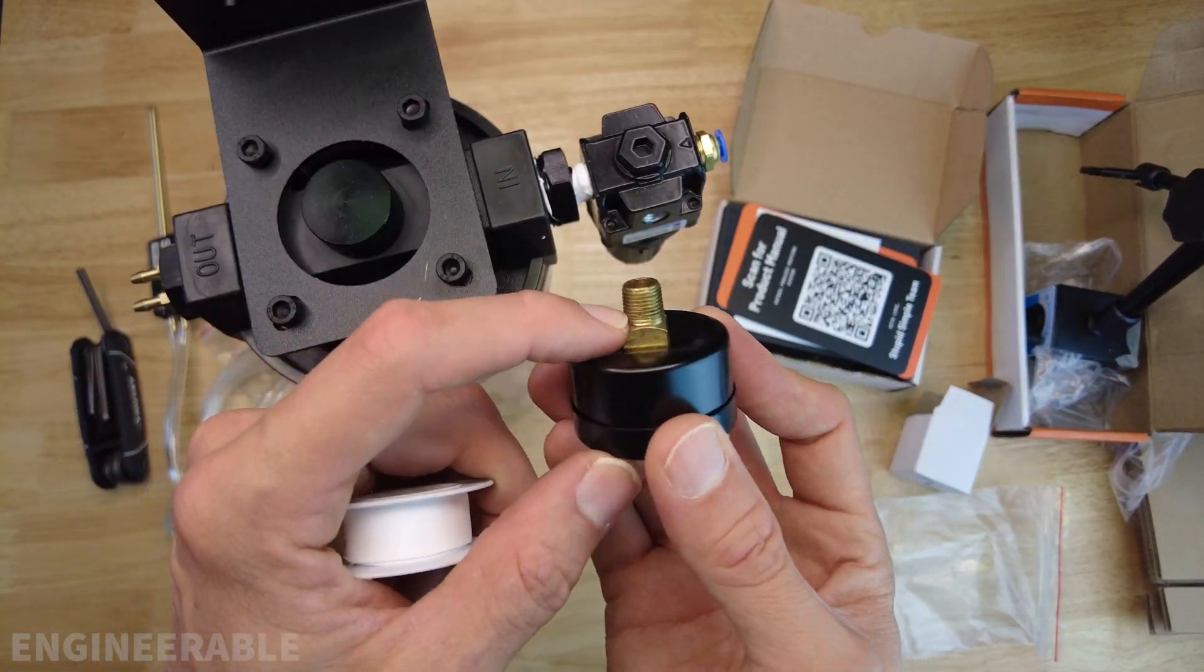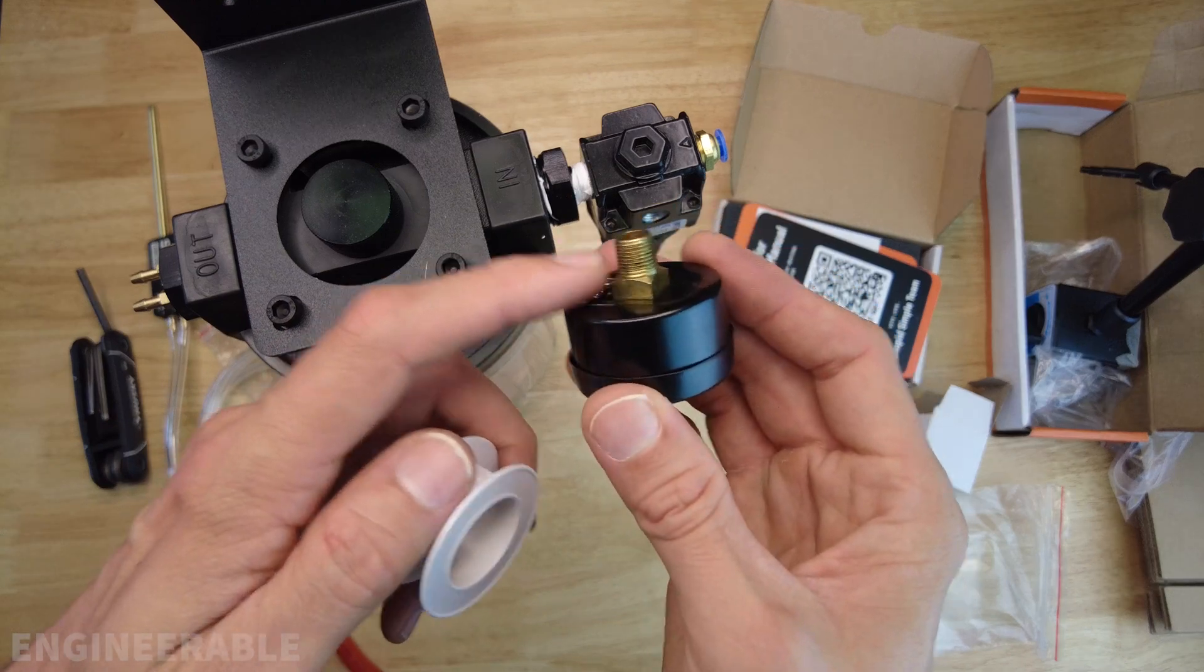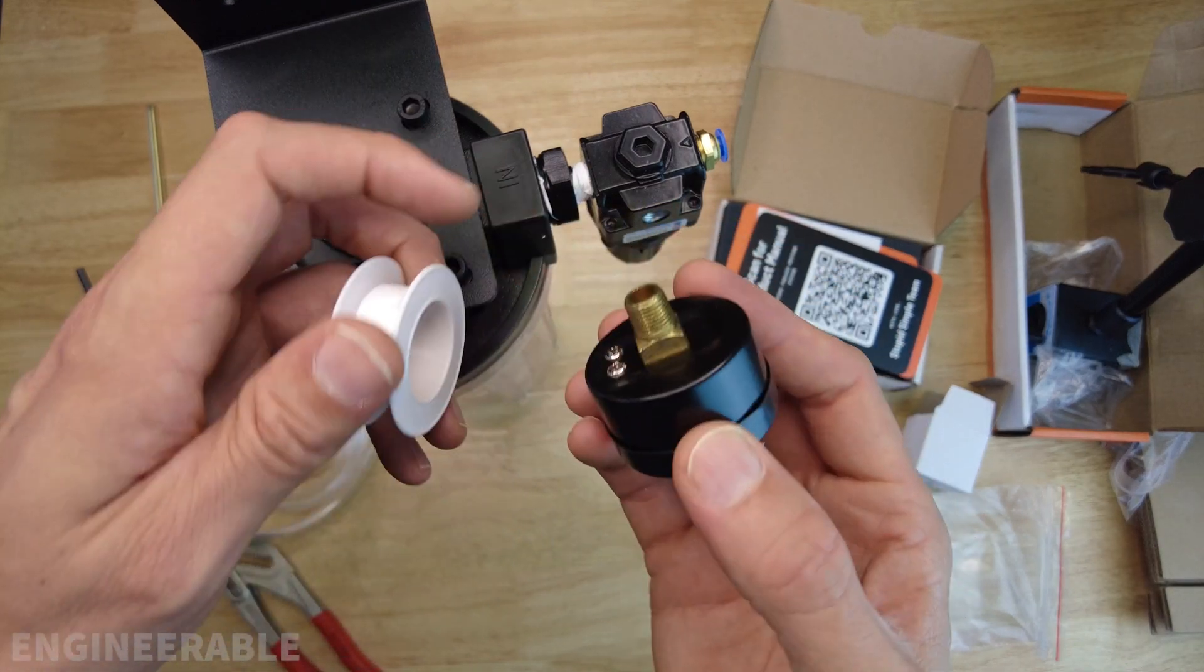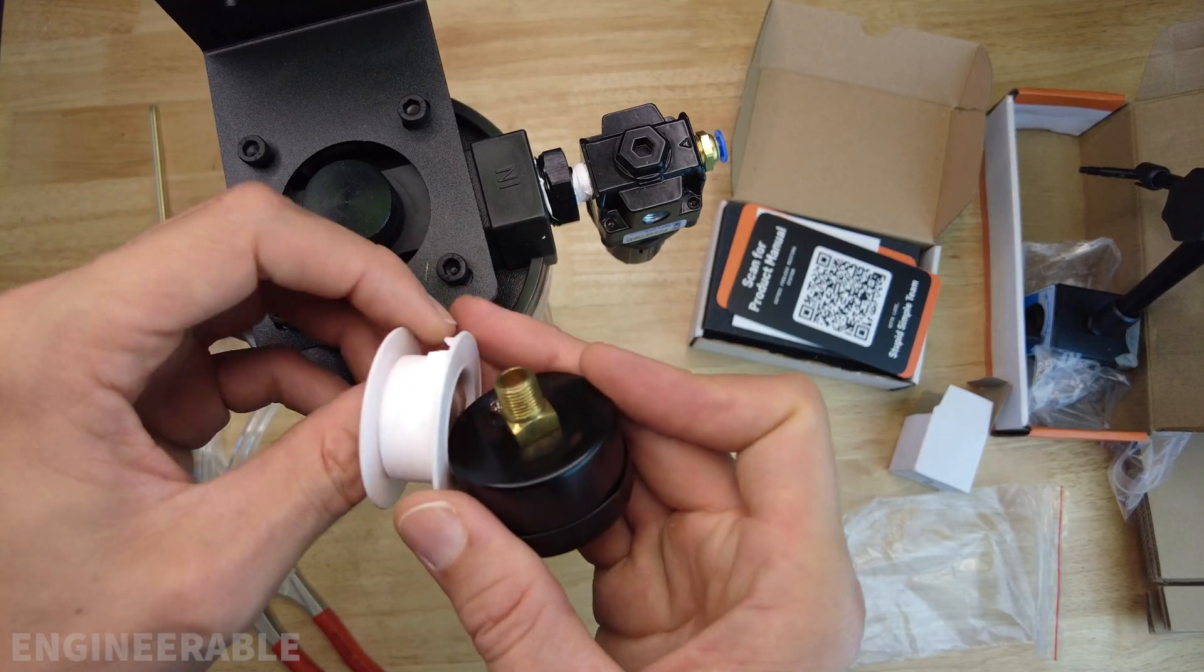This bracket feels like aluminum. The pressure gauge uses a tapered NPT fitting. In theory you don't really need to add Teflon tape because this should lock and seal due to the taper. However, it won't hurt to add a little bit of Teflon tape.